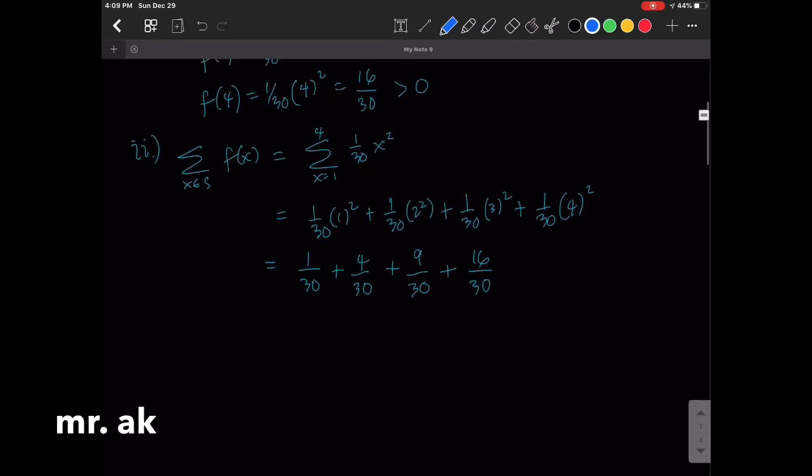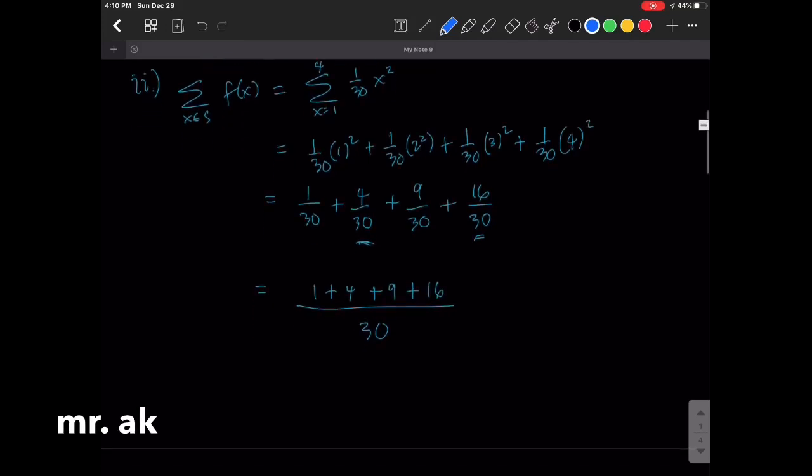Now, note, sum of these numbers can be simplified, but we choose not to, so that we can just easily add all the fractions. So our LCD is 30. 1 plus 4, plus 9, plus 16, and if we add all these numbers, we'll get 30 over 30 equals 1.